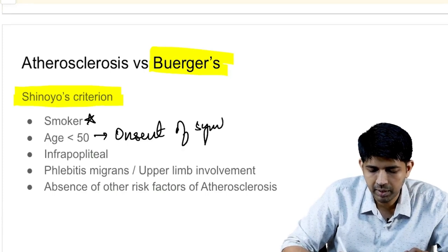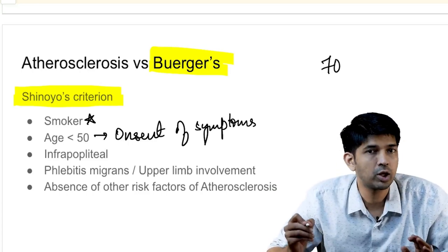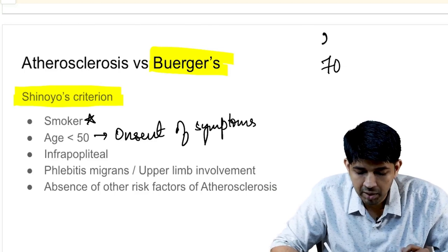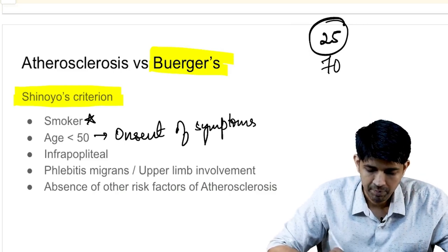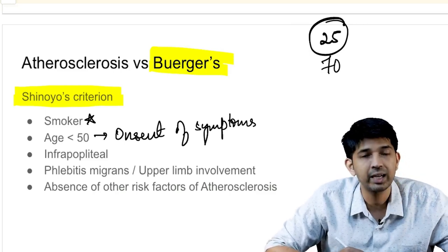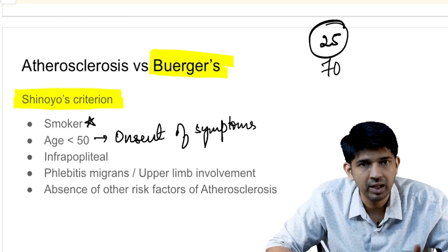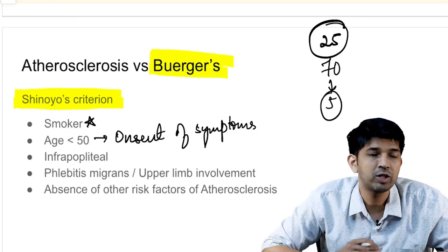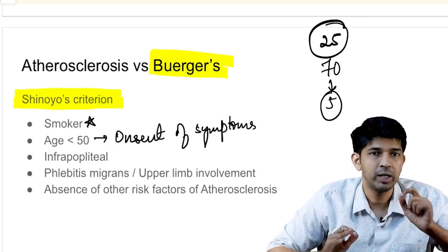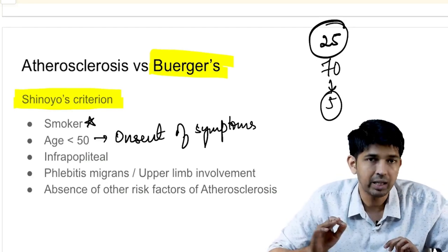What this means is: you may have a 70-year-old man in front of you, but that doesn't automatically mean it is atherosclerosis. If his symptoms started 25 years ago, that means onset was at age 45, which fulfills the criterion. However, if he's 70 but symptoms started only five years back, he does not fulfill Shinoyer's criteria. It is the onset of symptoms — not the current age of the patient — that matters.